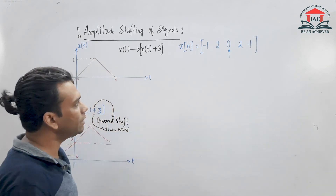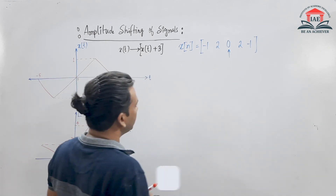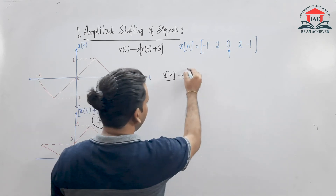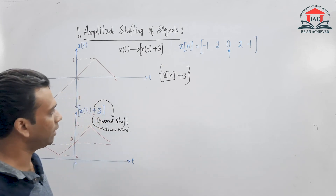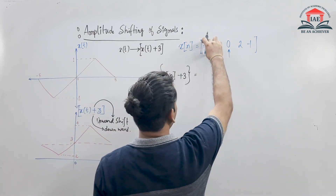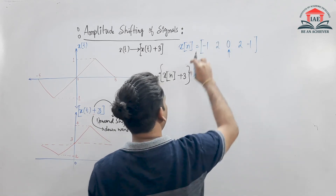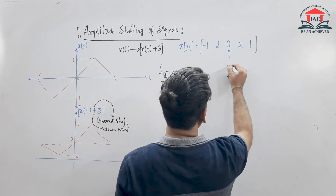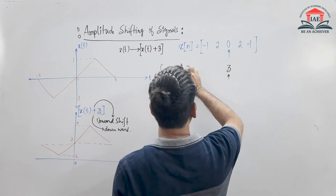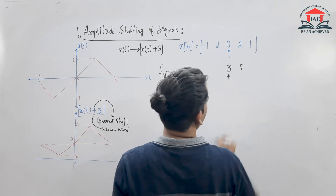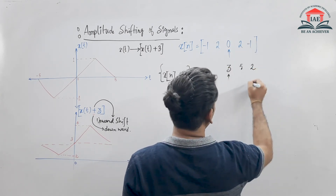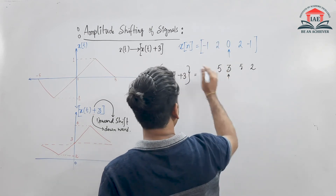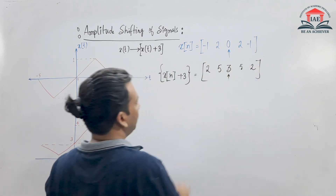Now if we think about the discrete domain — for a discrete signal, amplitude shifting works the same way. For amplitude shifting, whatever sample value was at each position, we add 3 to it. At n = 0, value was 0; 0 plus 3 equals 3. At n = 1, value was 2; 2 plus 3 equals 5. Minus 1 plus 3 equals 2, and 2 plus 3 equals 5. This is the amplitude shifted version of the discrete signal.